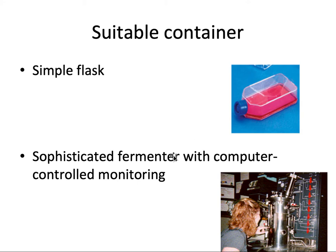We also need a suitable container. For mammalian cell culture we need specialized flasks, which can be bought from different companies. These flasks, like the T75 flask, vary in size depending on the amount of cells you want to culture. On an industrial scale, we use sophisticated fermenters which are controlled by computers.